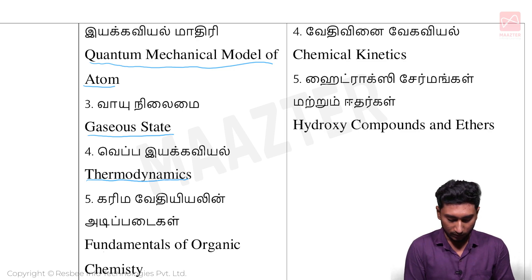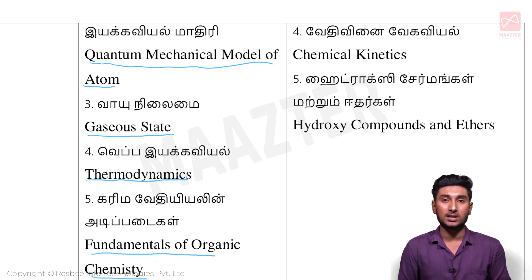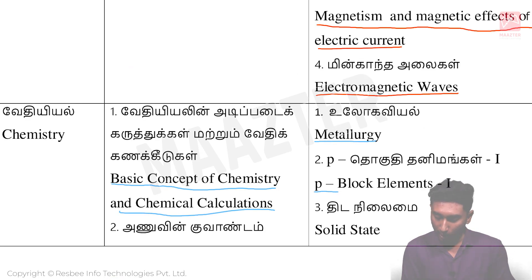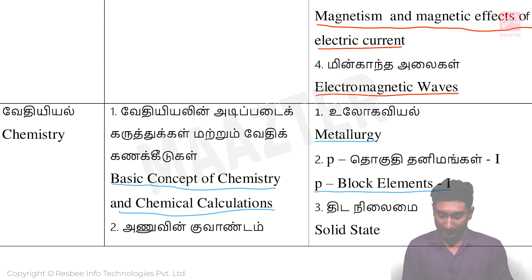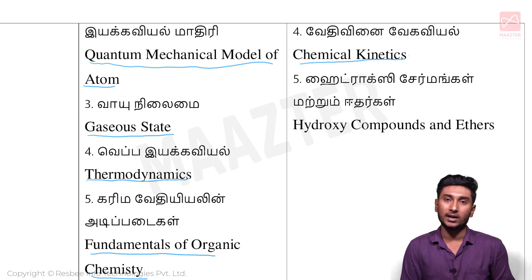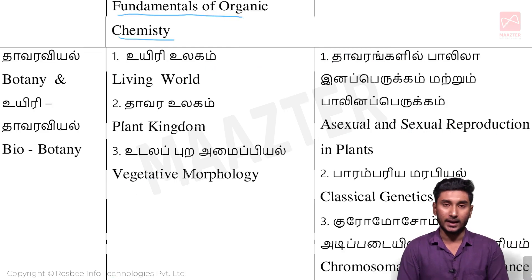Then Unit 11: Fundamentals of Organic Chemistry. For 12th standard Chemistry: Unit 1: Metallurgy. Unit 2: P-Block Elements. Then Unit 6: Solid State. Then Unit 7: Chemical Kinetics. Finally Unit 11: Hydroxy Compounds and Ethers.